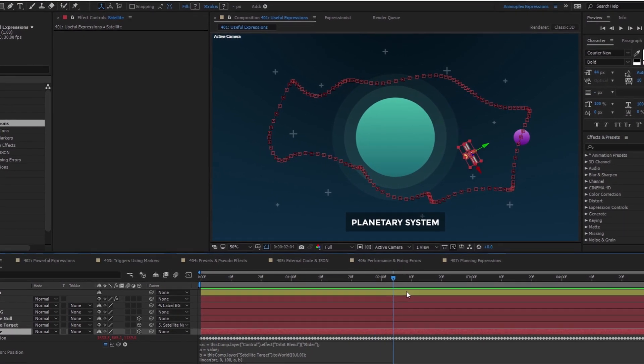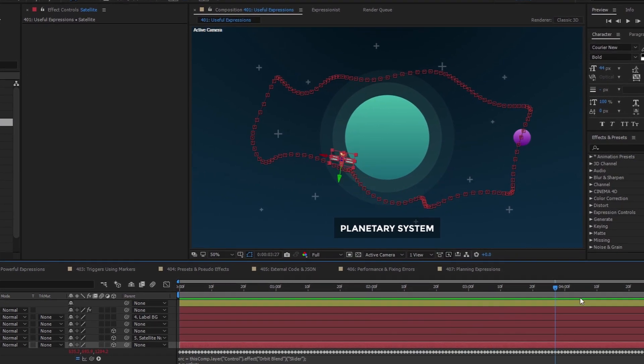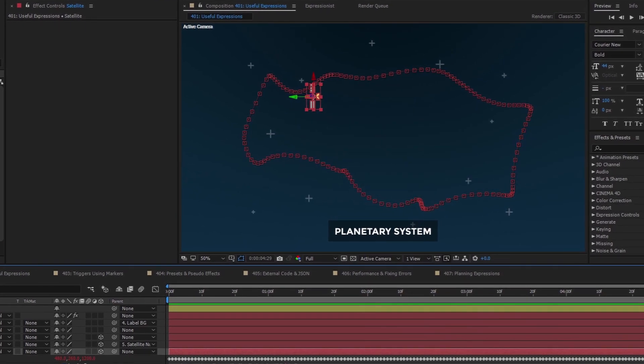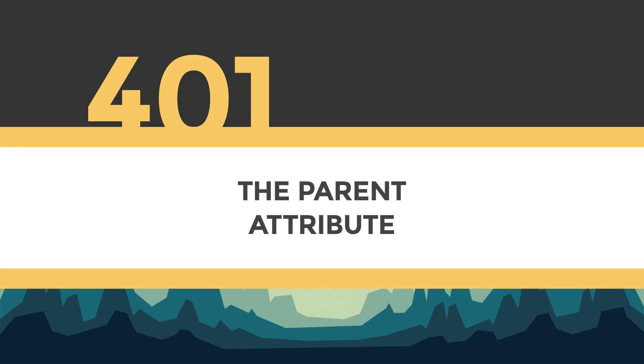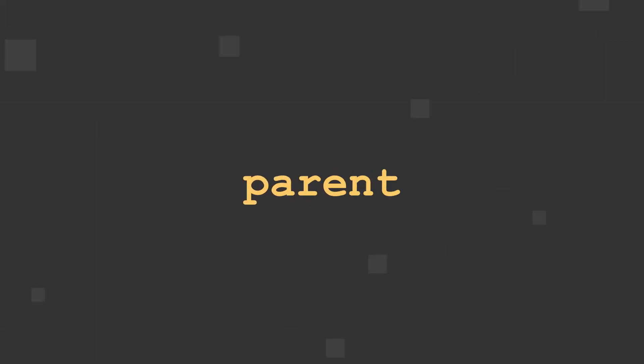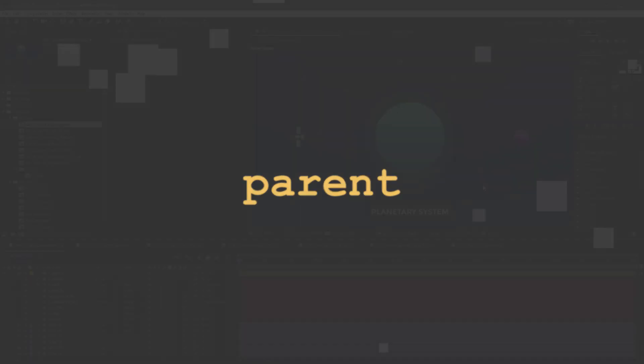Let's take a look at some useful expressions and go step-by-step to break down how they function. To see how the parent attribute works, you can apply it to the child layer's opacity.